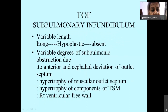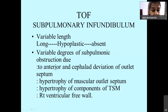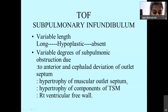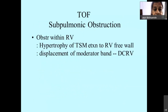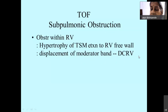The sub-pulmonary infundibulum can be of variable length — it can be hypoplastic, long but narrow, or even absent — all due to the variable degree of sub-pulmonic obstruction caused by the anterior and cephalad deviation of the outlet septum. All this contributes to hypertrophy of the muscular outlet septum and hypertrophy of the right ventricular free wall. Sometimes, severe sub-pulmonary obstruction and hypertrophy of the trabecular septum marginalis can extend to the free wall and displace the moderator band, giving a double-chambered appearance.